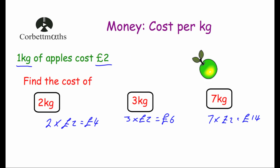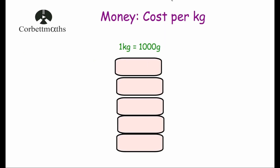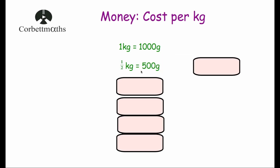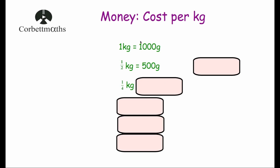It can be useful to know our conversion facts, particularly for non-calculator questions. One kilogram is 1000 grams. So half a kilogram is 500 grams. If we wanted the cost of something weighing 500 grams, that's half a kilogram, so it's half the price of one kilogram. A quarter of a kilogram is 250 grams — so for something weighing 250 grams, we take the cost of one kilogram and divide it by four.